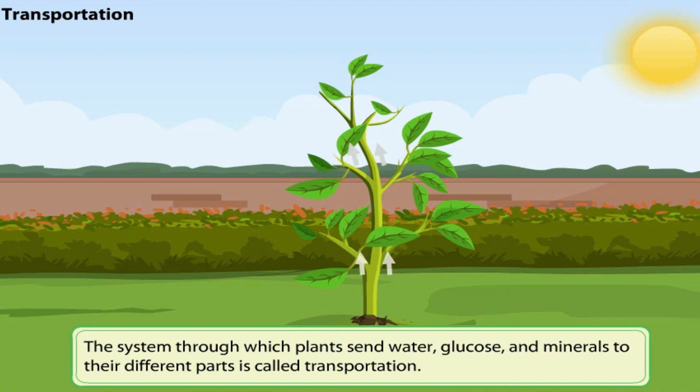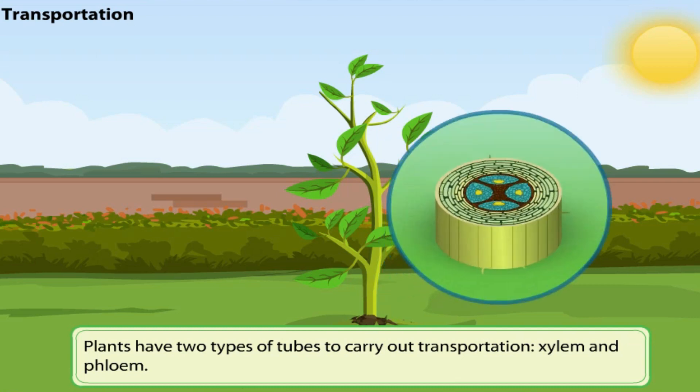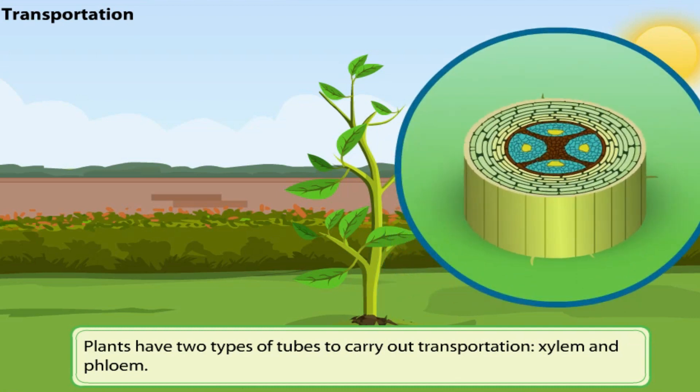There is a whole system in plants by which water is transported to different parts. In fact, it isn't only water transported, but glucose and minerals as well dissolved in the water. Transportation in plants takes place through two types of tubes: xylem and phloem.